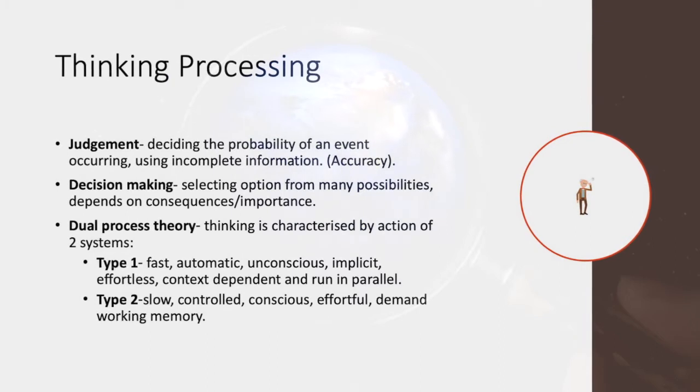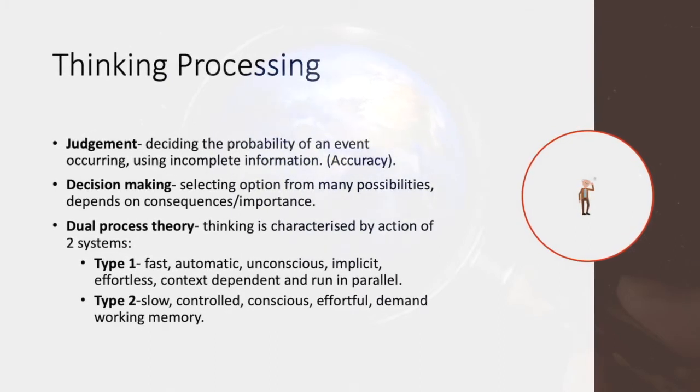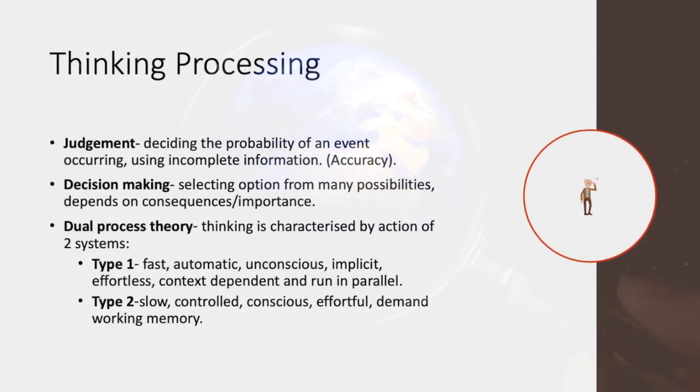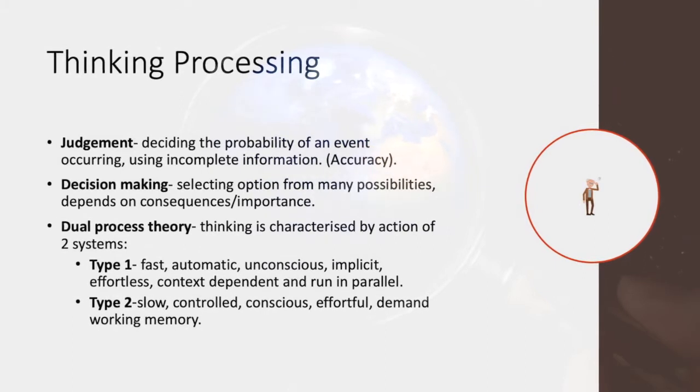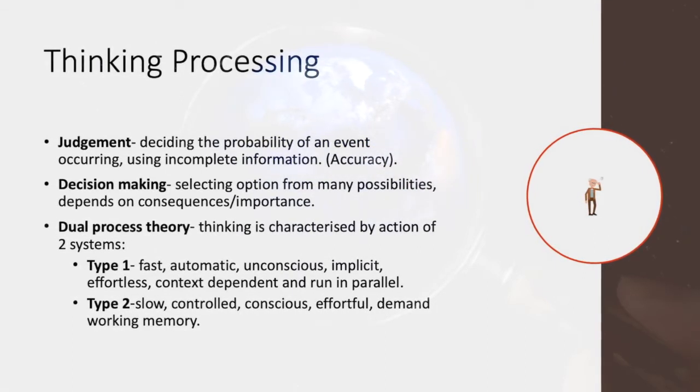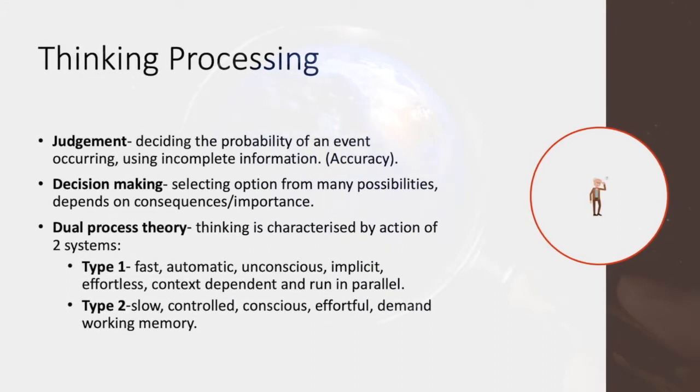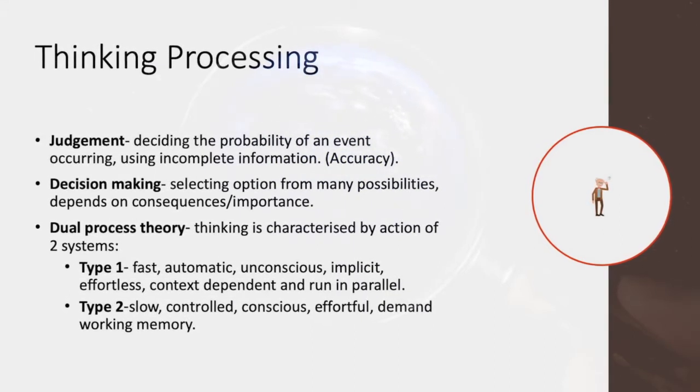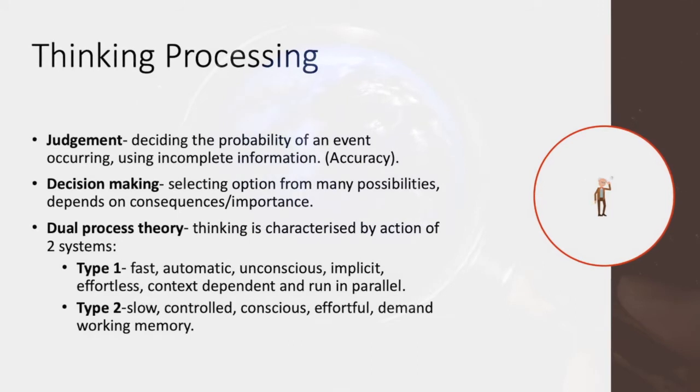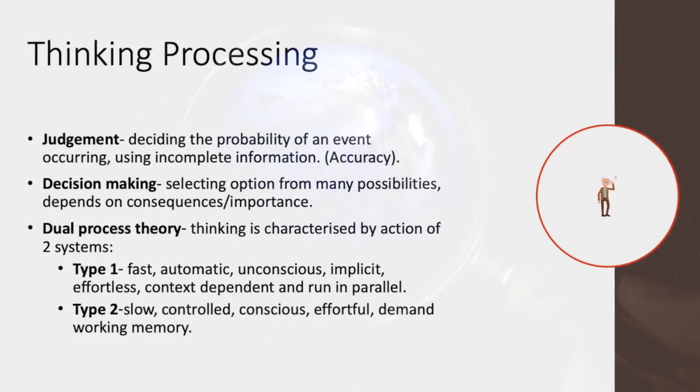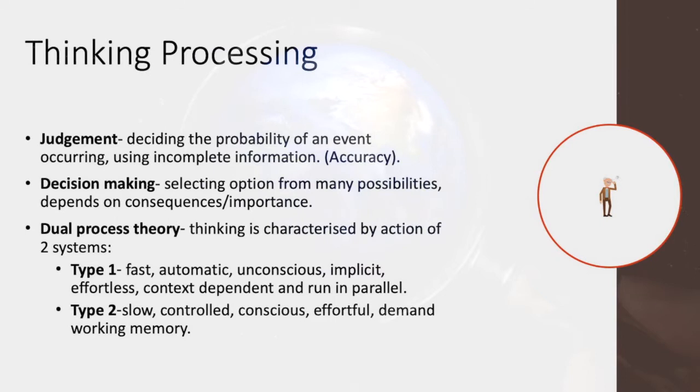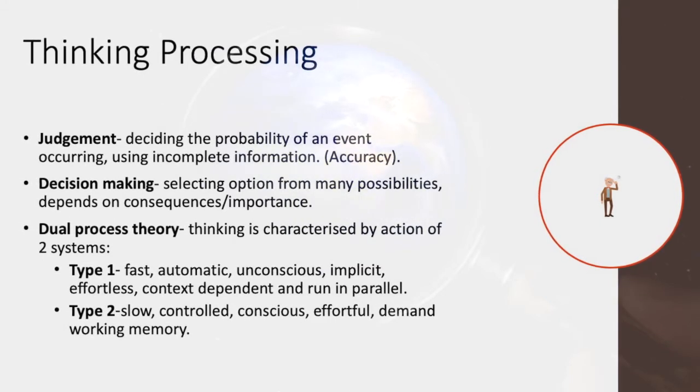In terms of thinking processes, there is the dual process theory which states that thinking is characterized by actions of two different systems. These include Type 1, which is fast, automatic, unconscious, implicit, effortless, context dependent and runs in parallel, and Type 2, which is slow, controlled, conscious, effortful and demands working memory.